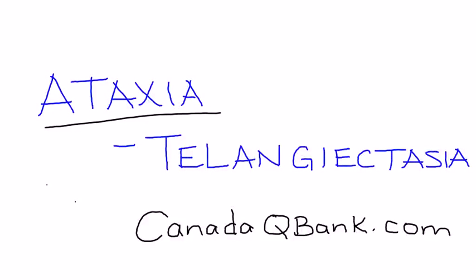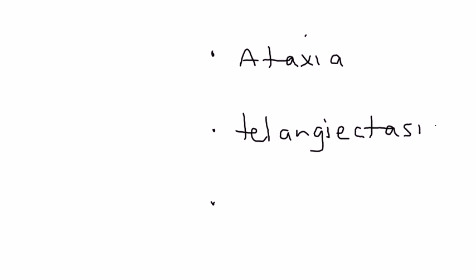Ataxia telangiectasia is the topic, abbreviated as AT. Ataxia telangiectasia is basically a pediatric disorder, and the three fundamental aspects of it are ataxia, which is poor gait, and telangiectasia, a big long word which essentially are small dilated blood vessels.